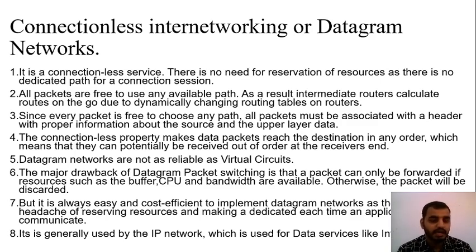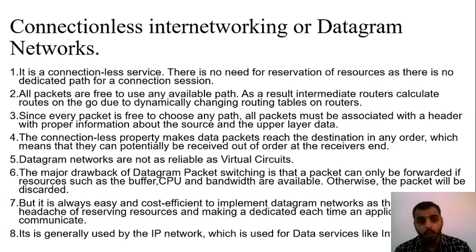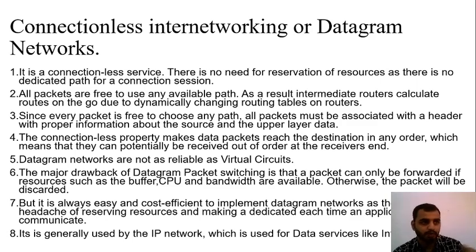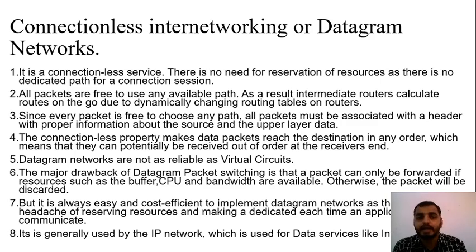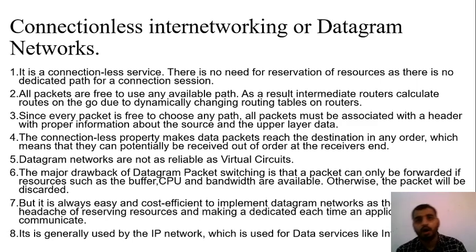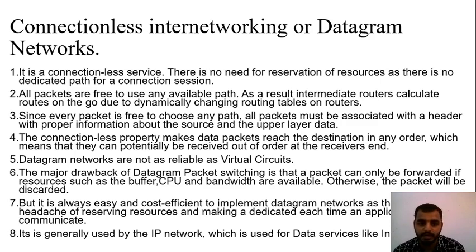Fourth point: the connectionless property means data packets can reach the destination in any order — they can potentially be received out of order at the receiver end. For example, if I send packets 1, 2, 3, 4, 5, I might receive them as 1, 3, 4, 2, or 4, 5, 3, 2, 1 — anything can happen. Whereas in connection-oriented, if I send in 1, 2, 3, 4, 5 format, I will receive them in 1, 2, 3, 4, 5 format. Connectionless internetworking is dynamic and will not receive packets in an ordered way.